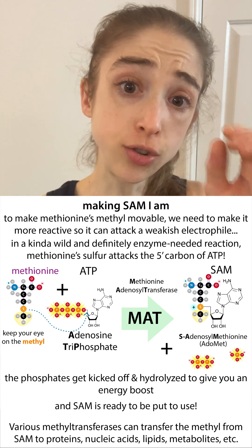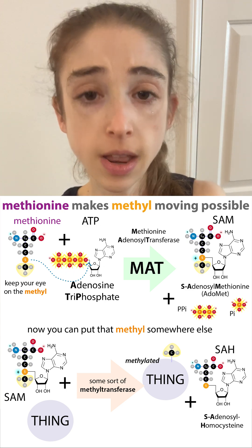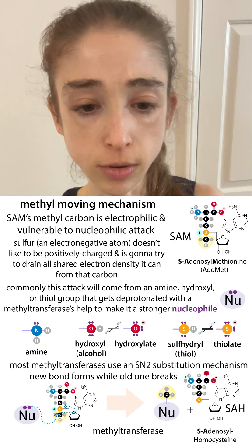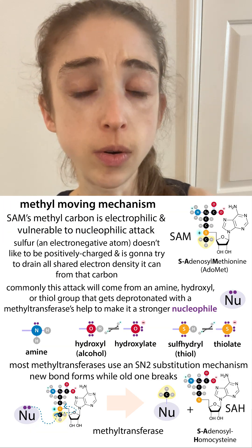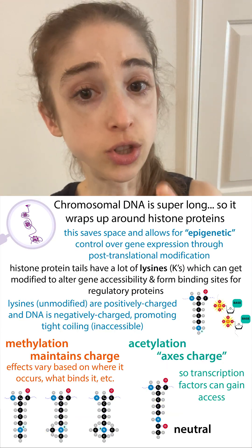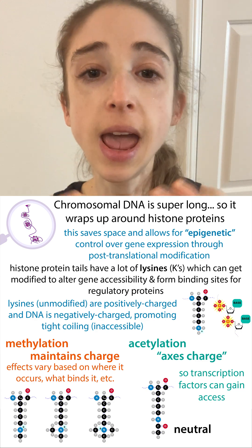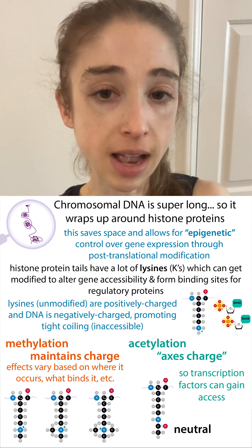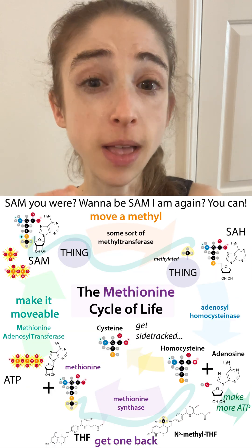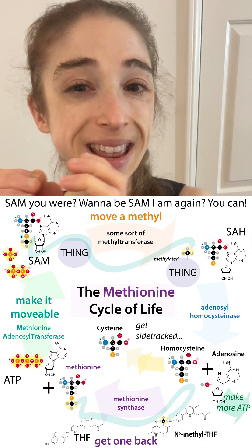What we want to do now is actually transfer that methyl group off and onto another molecule. The way we're going to do this is with additional enzymes called methyltransferases. Those methyltransferases come in and take that methyl group and transfer it onto another molecule, such as onto a lysine of a histone protein that DNA is wrapped around — and that's going to help silence that region of the DNA so that gene doesn't get used. Now you're left with this molecule: S-adenosylhomocysteine, or SAH.